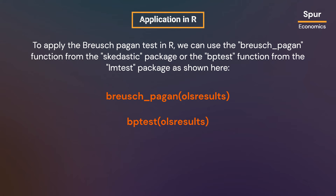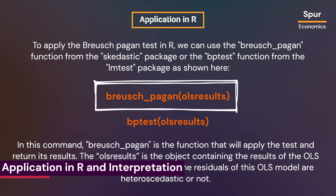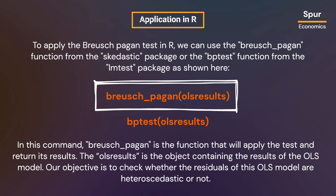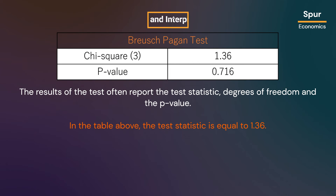To apply the Breusch-Pagan test in R, we can use the breusch_pagan function from the skedastic package, or the bp_test function from the lmtest package. In this command, breusch_pagan is the function that applies the test and returns its results, and ols_results is the object containing results of the OLS model. The bp_test function works in a similar manner. Both commands apply the same test and return the same results, reporting the test statistic, degrees of freedom, and the p-value.